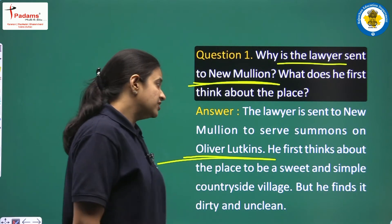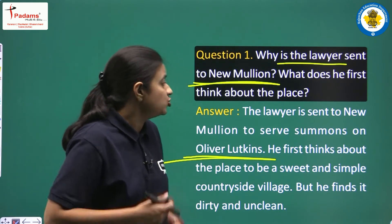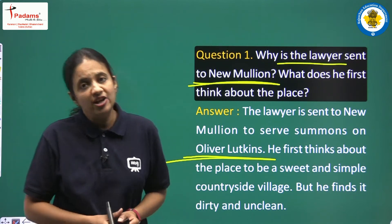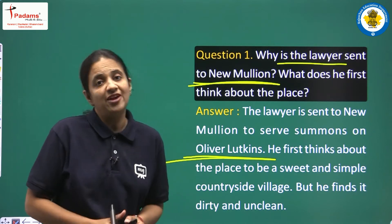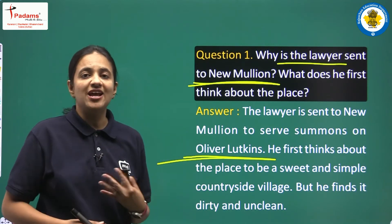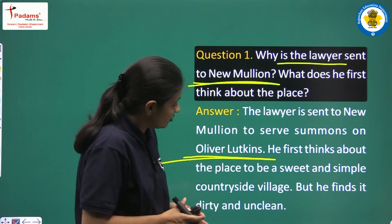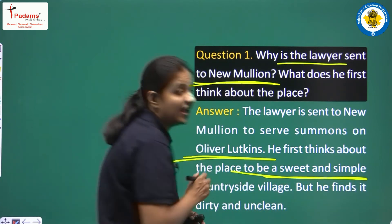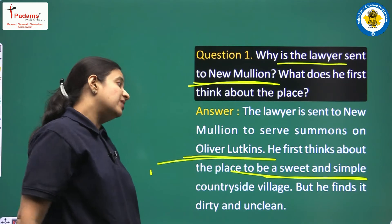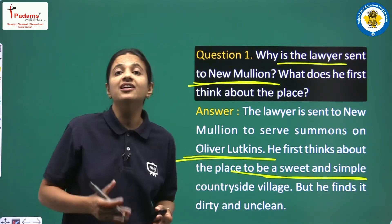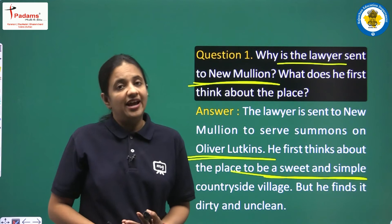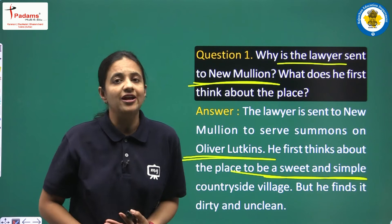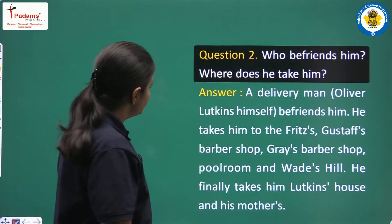He first thinks the place will be a sweet and simple countryside village. As we read in the chapter, he was very fed up with city life and had a fascination for country village life. But when he arrives, he finds it dirty and unclean, and he was very disappointed.